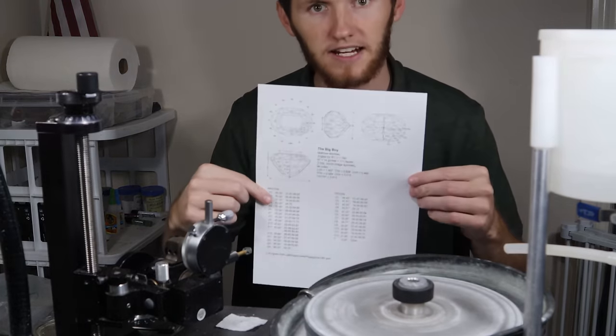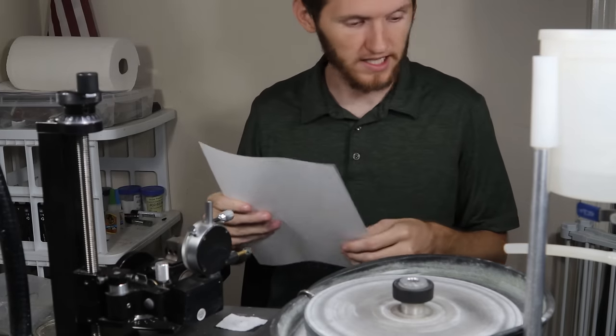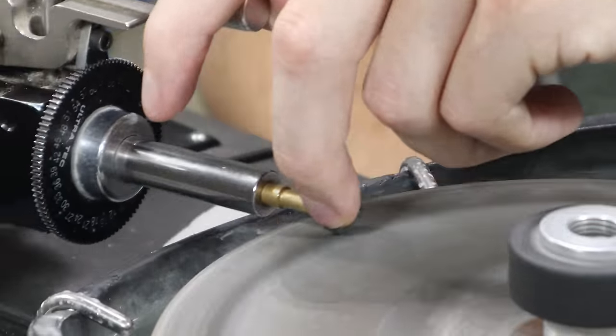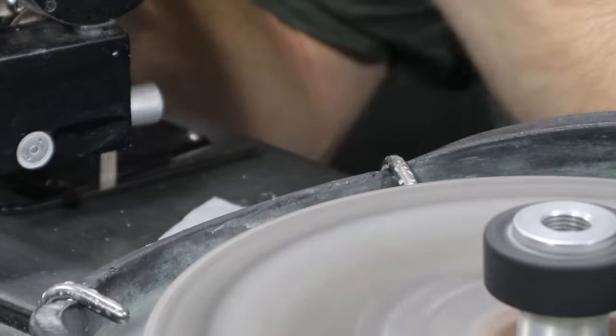Alright I got the diagram made, took forever over two hours, ready to get going on this. I use a 600 grit lap to lightly go back over the girdle and cut in all of the pavilion facets.